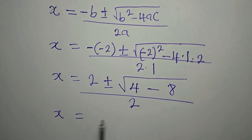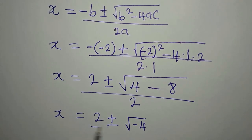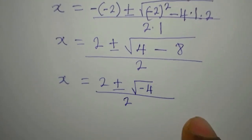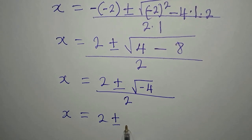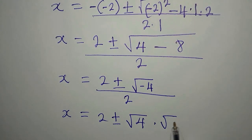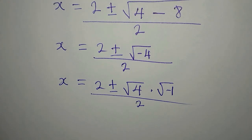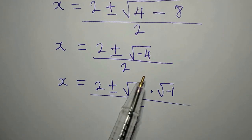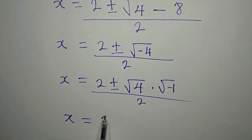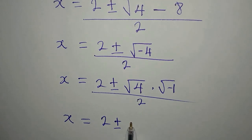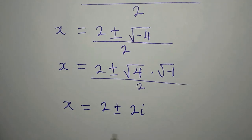We have x equals 2 plus or minus the square root of negative 4, all over 2. This means x equals 2 plus or minus the square root of 4 times the square root of negative 1, all over 2. The square root of 4 is 2, and the square root of negative 1 is imaginary, so we write i. This gives x equals 2 plus or minus 2i, all over 2.